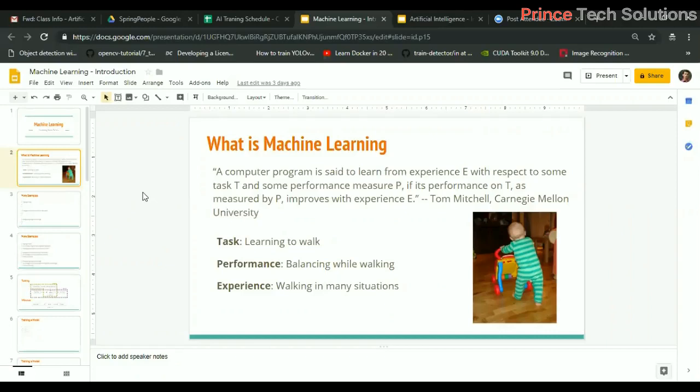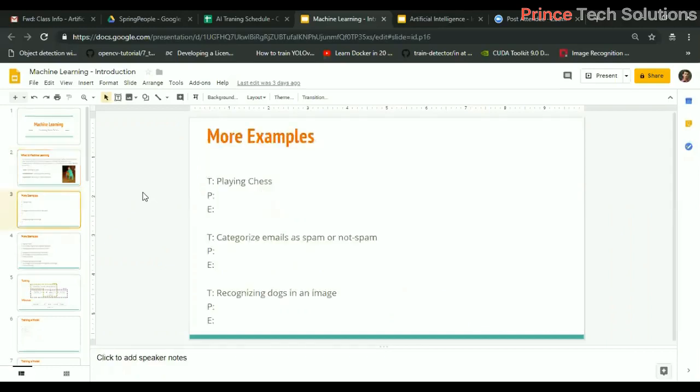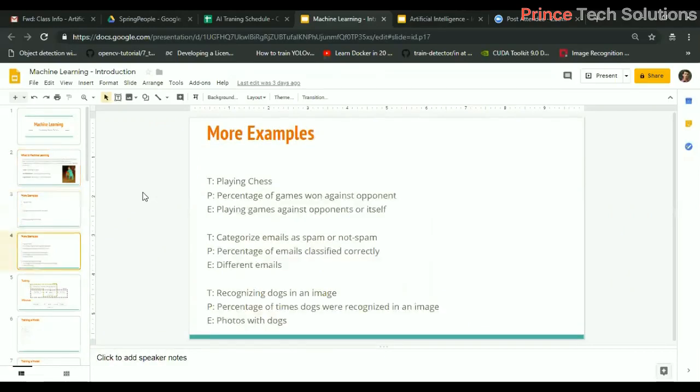There are a few more examples, like playing chess. The task is playing chess. The performance we measure is the percentage of games won against the opponent. The experience is playing games against the opponent or itself.